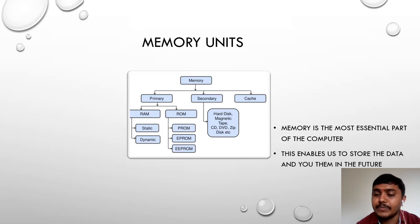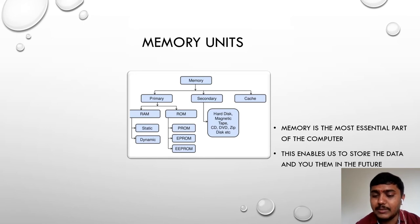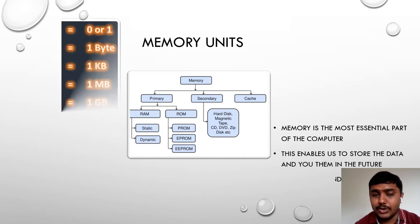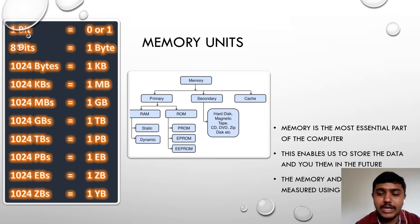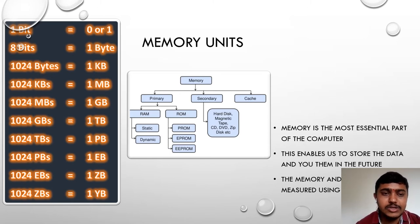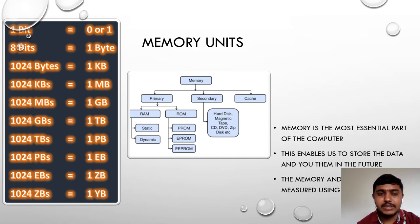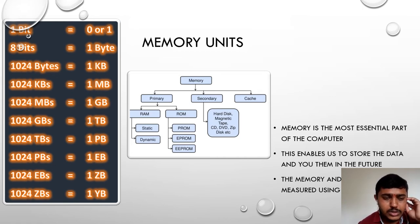Memory units enable us to store the data and use it in the future. Memory is measured in the form of bytes or bits. One byte means 8 bits — if you join eight bits of data, it becomes one byte. 1024 bytes of data becomes one kilobyte.